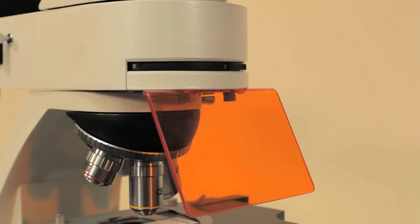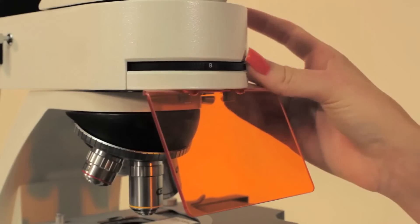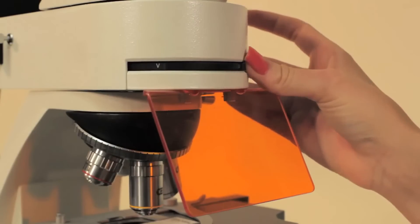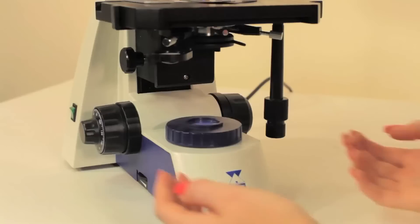The unit is supplied complete with bright field viewing and the common four filter blocks: blue, green, UV, and violet, located in the turret module with the fifth position filter-free to allow for conventional bright field viewing.